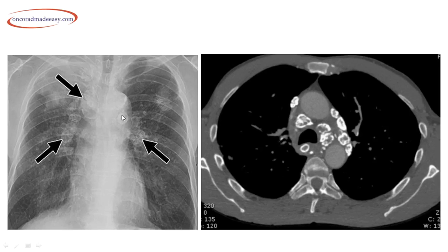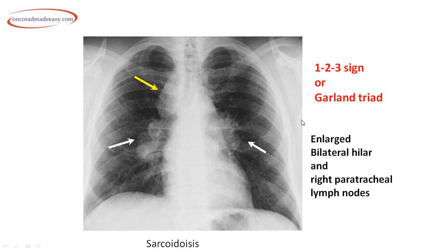CT shows multiple rounded lymph nodal masses in the mediastinum and both hila showing thick peripheral calcification — seen in the diseases listed above. Bulky lymph nodal masses in both hila and the right paratracheal region are typical of sarcoidosis — this is the 1-2-3 sign or Garland sign: 1 = right hilum, 2 = left hilum, 3 = right paratracheal region.